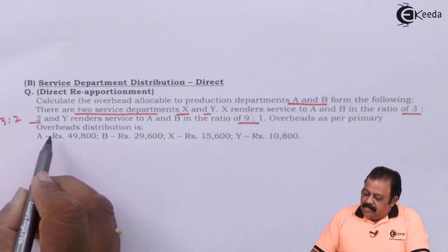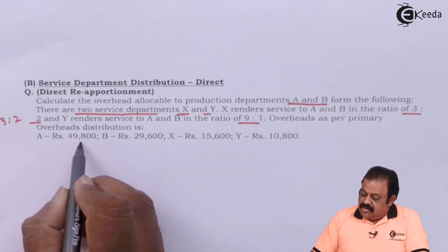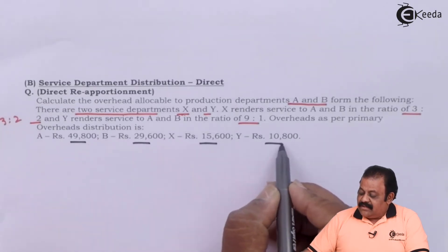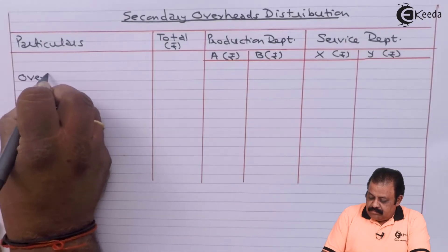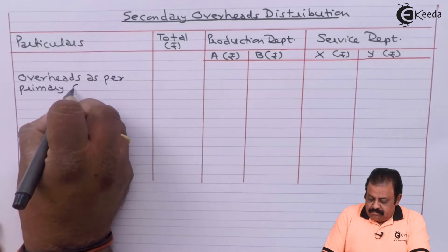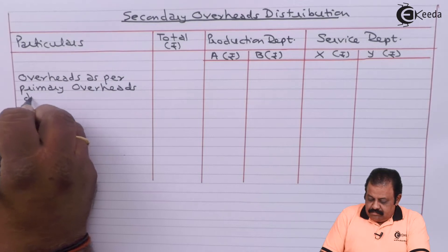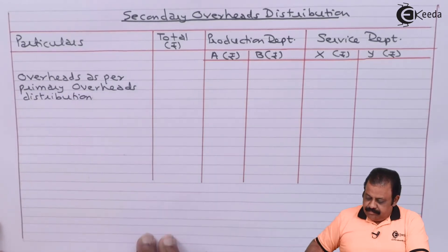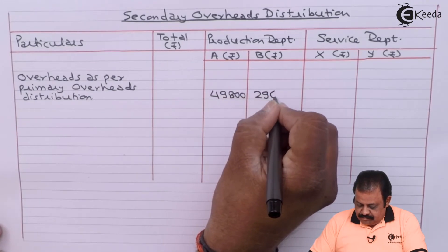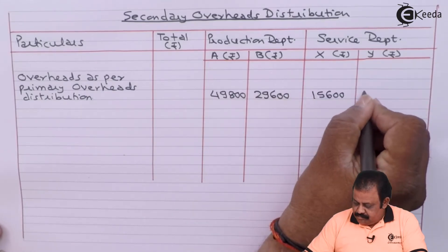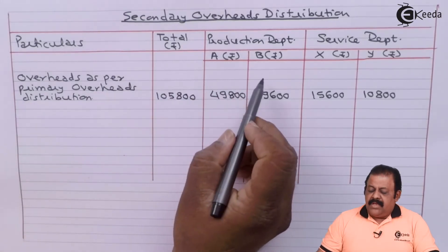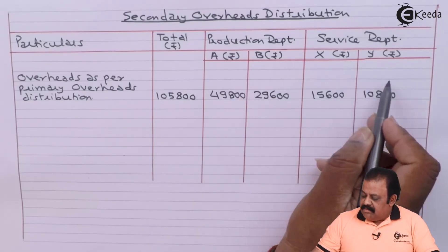Overheads as per primary overhead distribution: A — 49,800; B — 29,600; X — 15,600; Y — 10,800. Department A and B are production departments; Department X and Y are service departments.